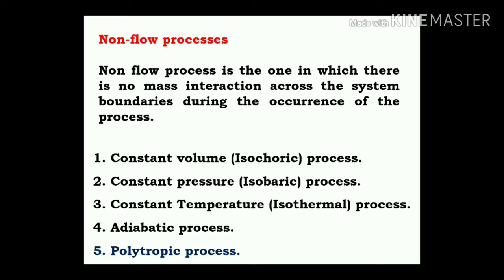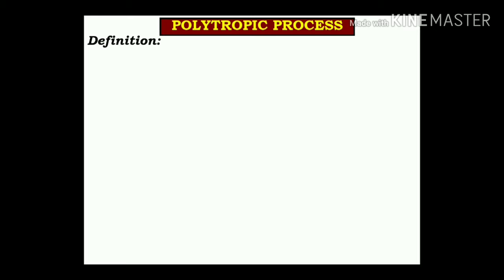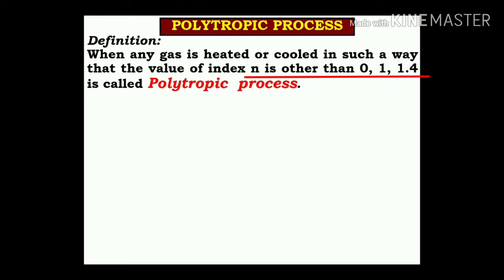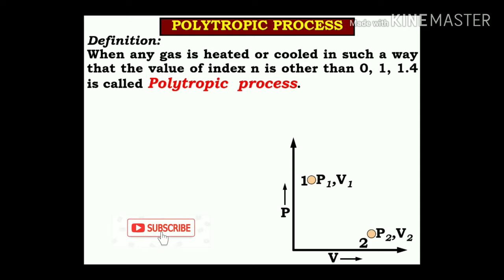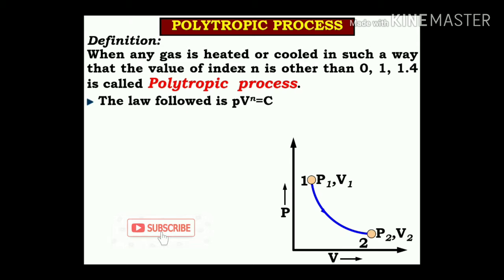Finally, the polytropic process. When any gas is heated or cooled such that the value of index n is other than 0, 1, or 1.4, that is called a polytropic process. In the PV diagram, the x-axis is volume and the y-axis is pressure. Point 1 has initial position P1V1, point 2 has P2V2. The process from 1 to 2 following PV^n = constant is called the polytropic process.